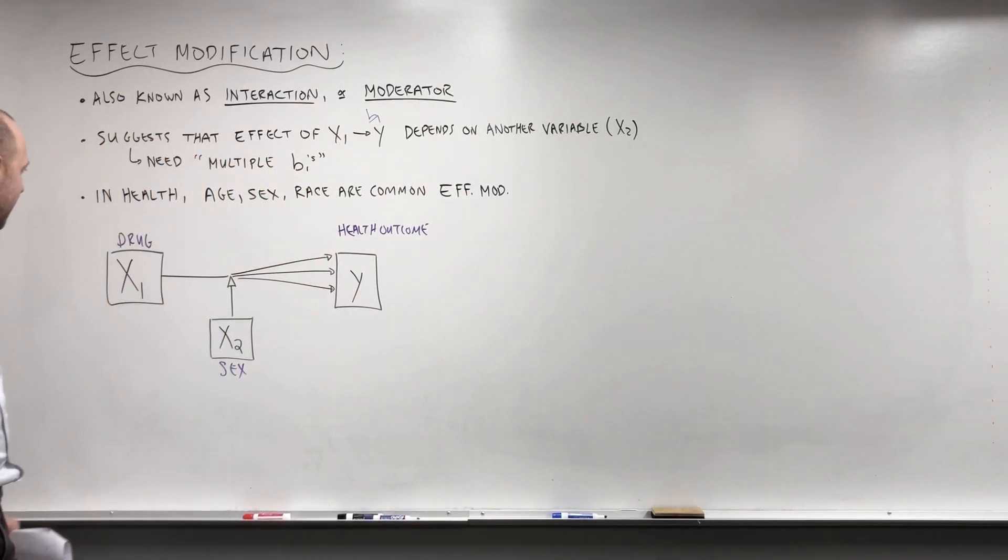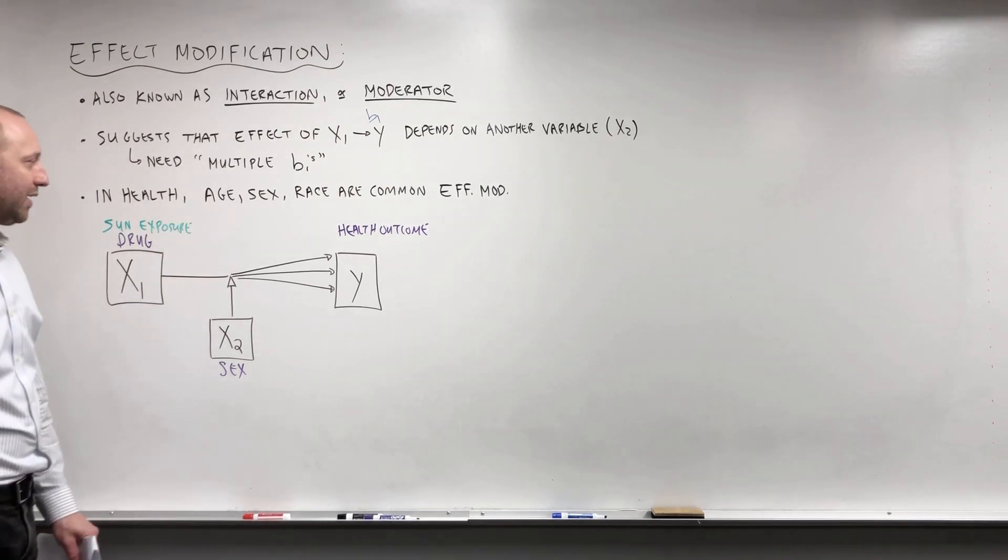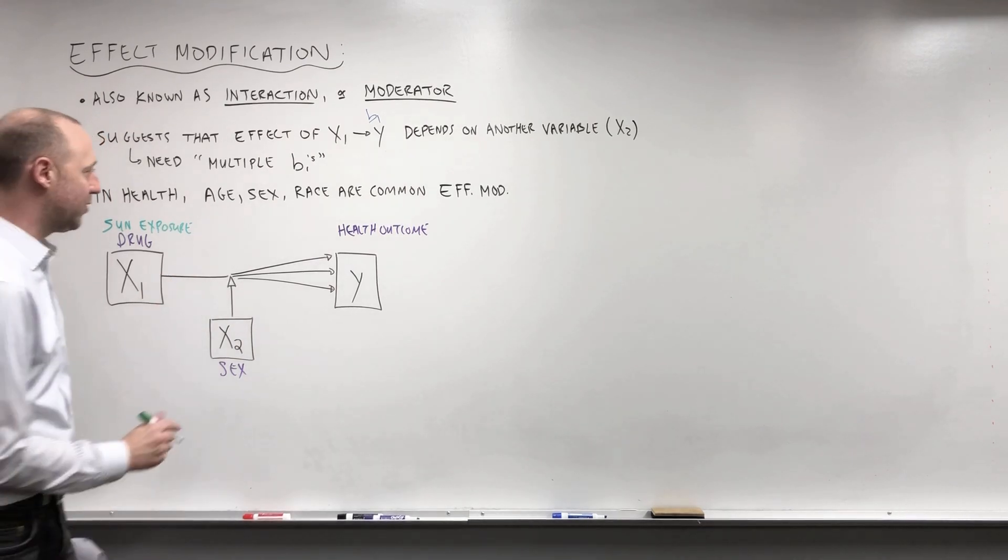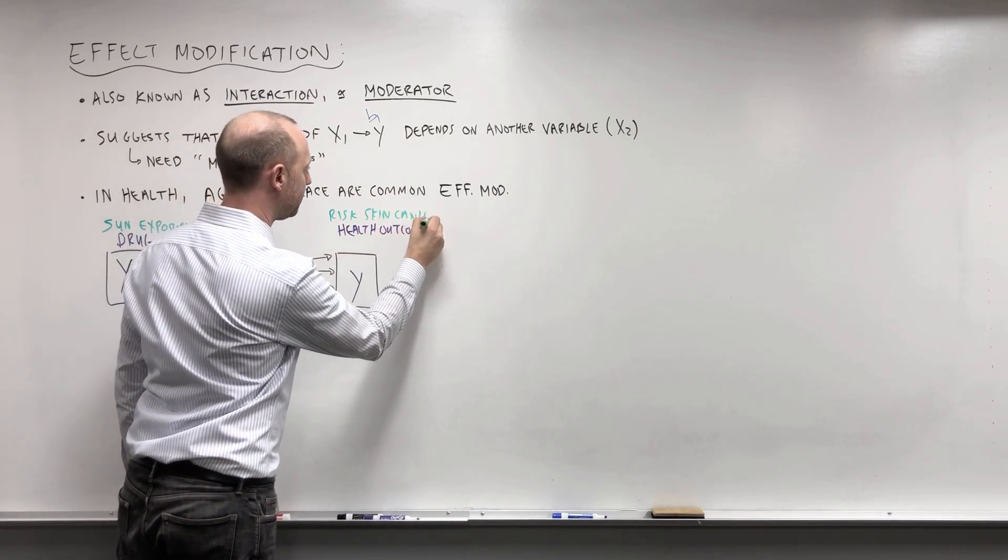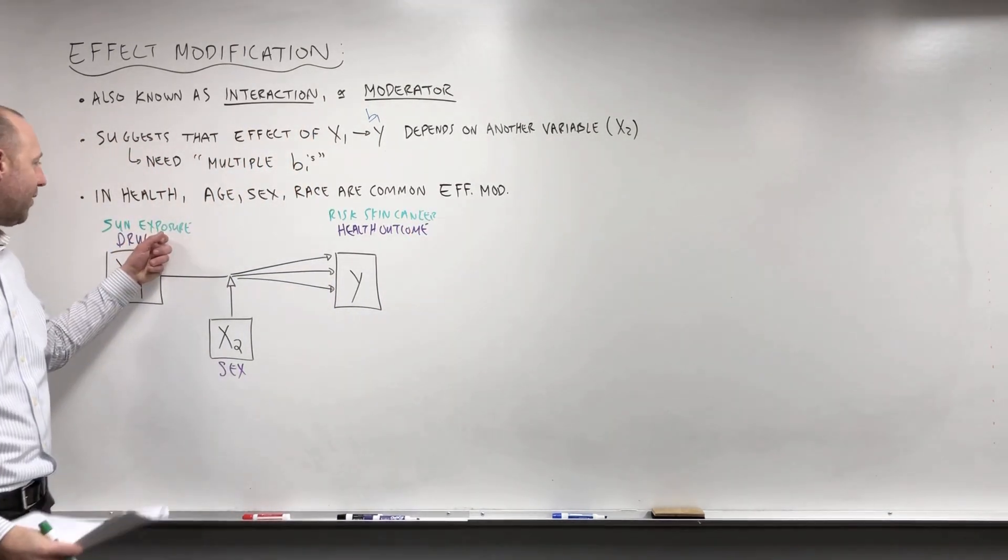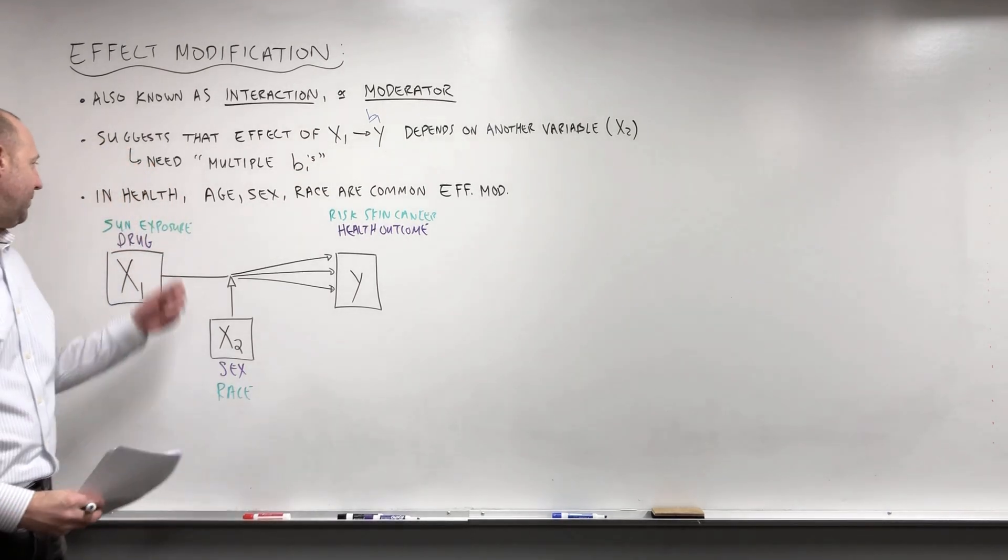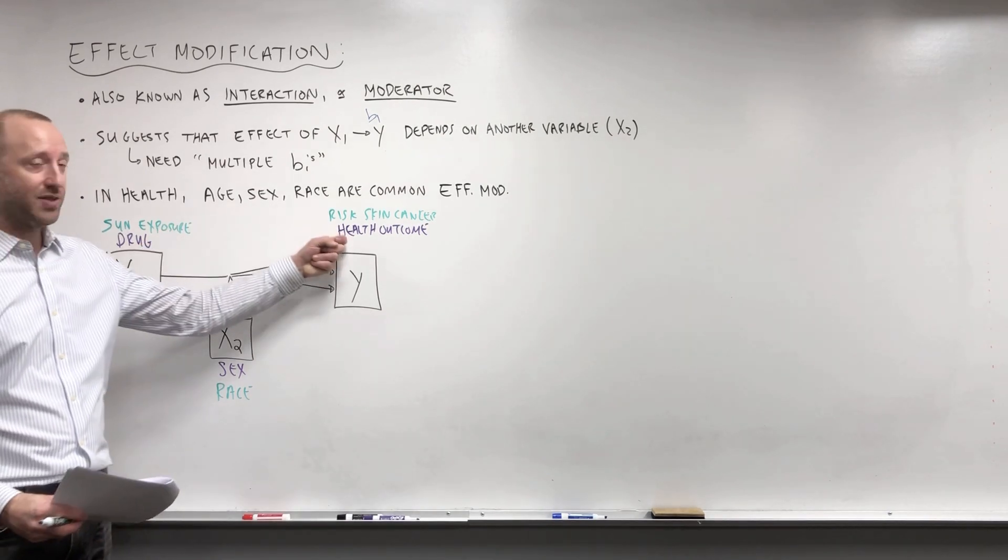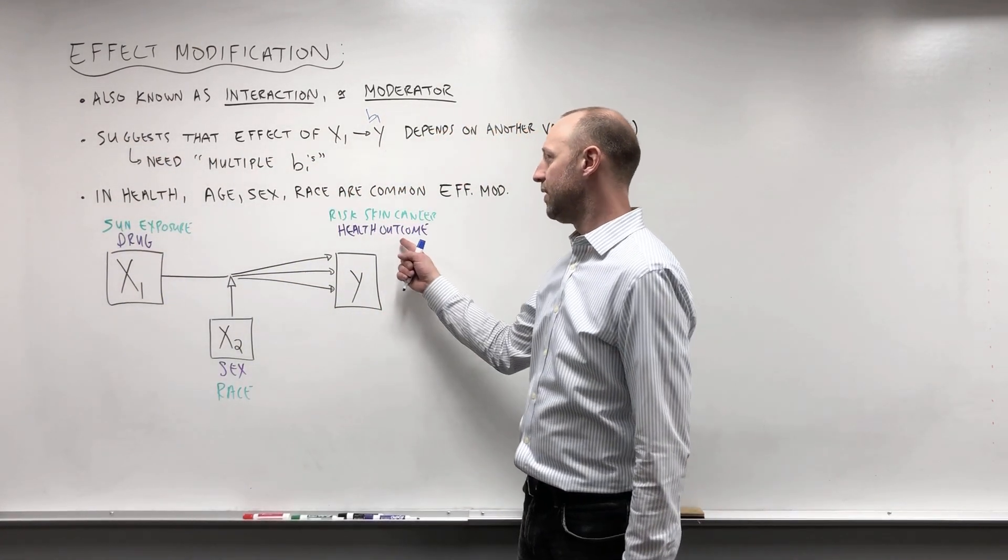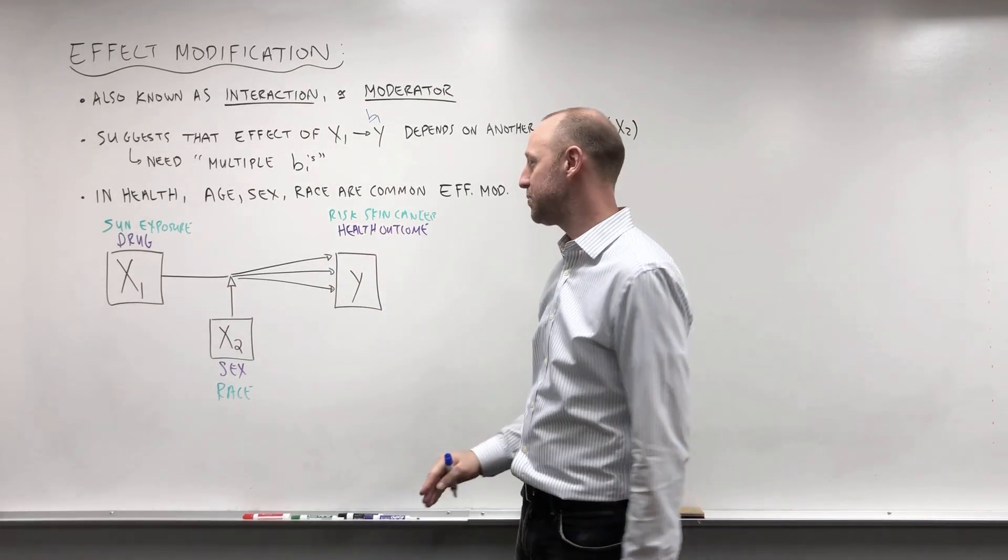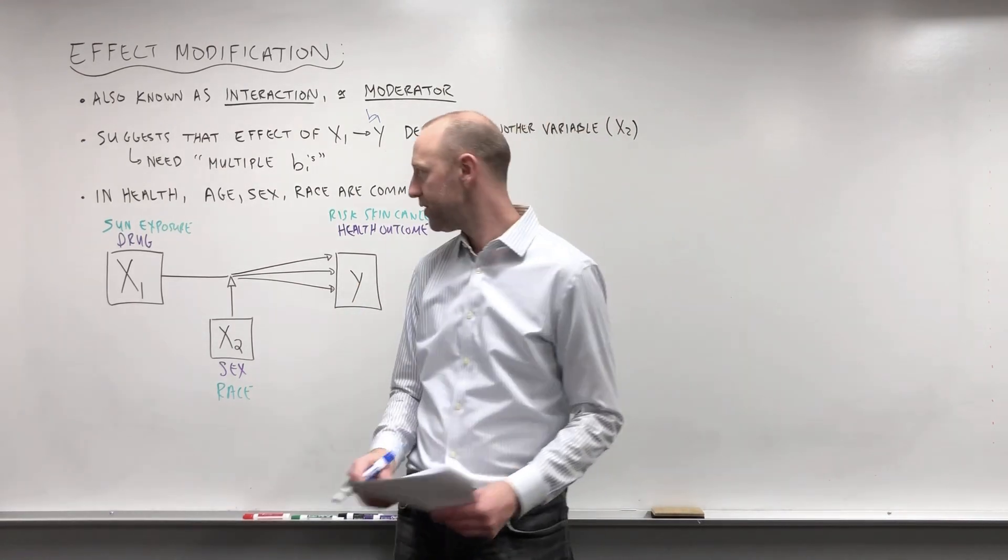Another example that we can think of is maybe we're looking at the effect of sun exposure, so spending an hour in the sun or some unit of exposure on your risk of skin cancer. And so when I say what effect does every additional hour spent in the sun do to your risk of skin cancer, a potential effect modifier might be race. So the effect of spending time in the sun, the effect that that has on your risk of skin cancer might change depending on the race you're categorized as. The thought there being that lighter skin is going to be more susceptible to getting skin cancer. Every extra hour spent in the sun is more damaging if your skin is lighter or less damaging if it's dark. So these are all ideas of potential effect modifiers conceptually.